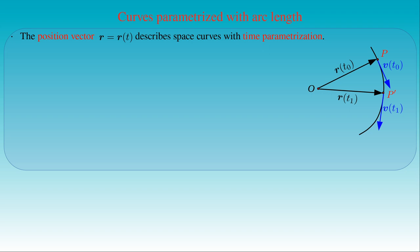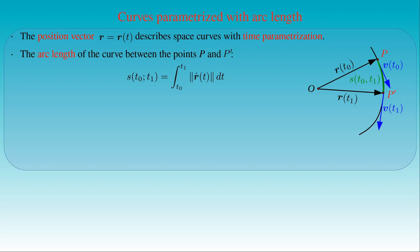Then we can compute the arc length of the curve between the points P and P'. The arc length s is the integral of the length of the tangent of the curve over the interval between t0 and t1, where the tangent is the parametric derivative of the position vector r. The arc length covered by the moving body between the points P and P' is indicated with the green curve.